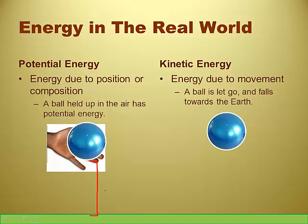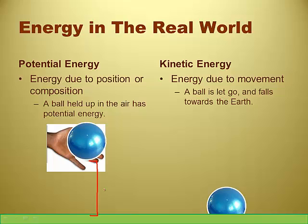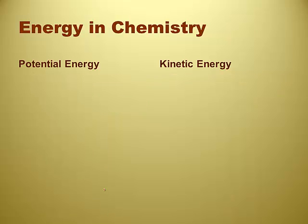If a ball is let go from that same height and falls toward the earth, it has kinetic energy while it is moving. When it hits the ground, it has no potential energy. The potential energy is transferred to kinetic, with some loss to friction. The amount of kinetic energy the ball had while falling was equal to the amount of potential energy it had while held above the ground.